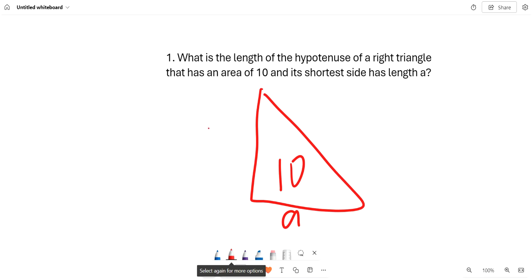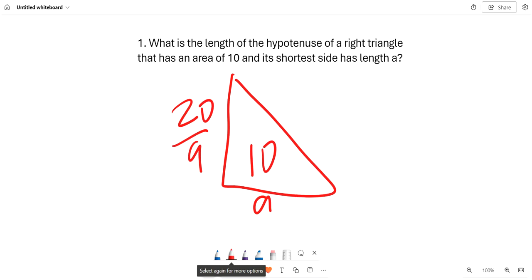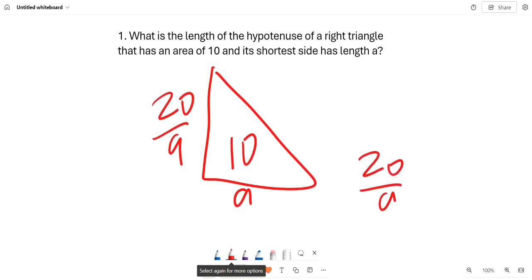And from this, we can see that the other side is 20 over a, because 20 over a times a equals 20 and divided by 2 equals 10, which is the area.